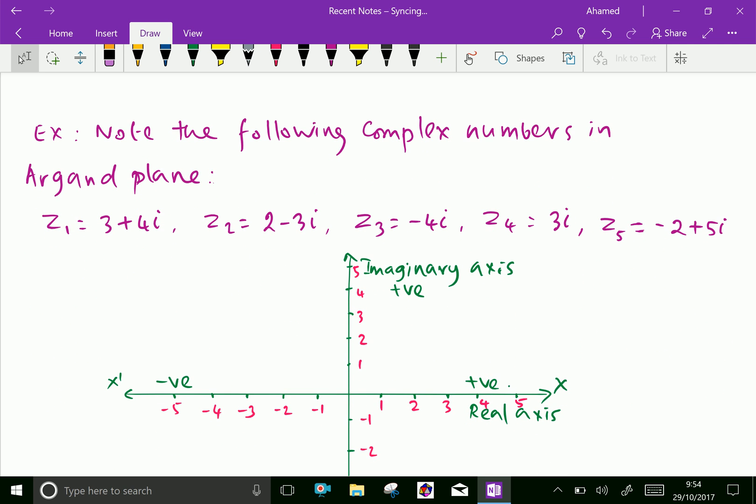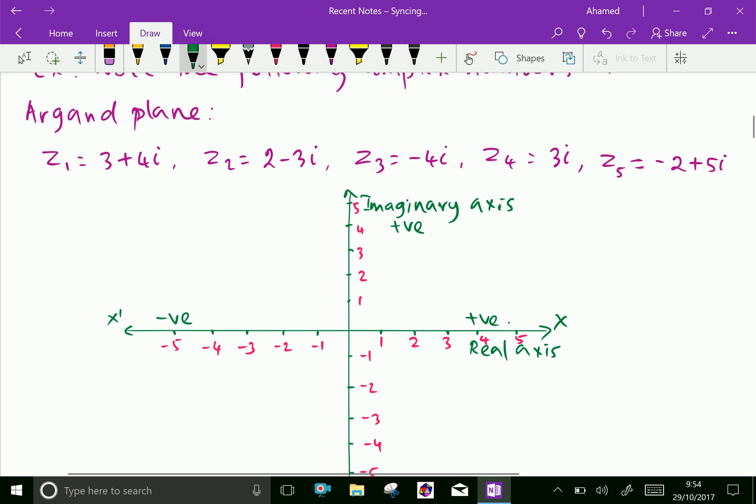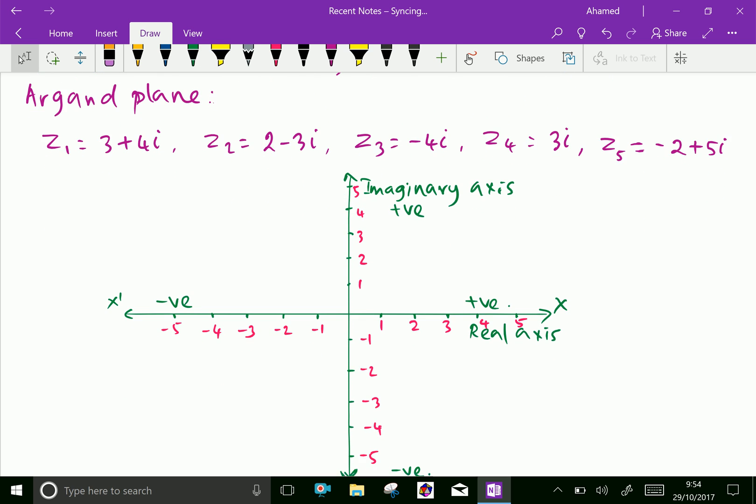Now let us do some examples regarding complex numbers in the Argand diagram. Note the following complex numbers in the Argand plane. Look at this plane. In the xy-plane, the x-axis is the real axis and the y-axis is the imaginary axis.